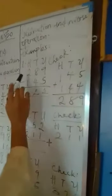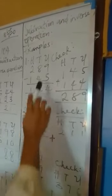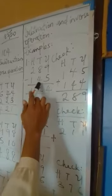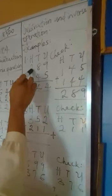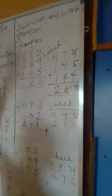Alright, let's look at subtraction and inverse operation. I have solved one already: 289 minus 145. 9 minus 5 is 4, 8 minus 4 is 4, 2 minus 1 is 1.